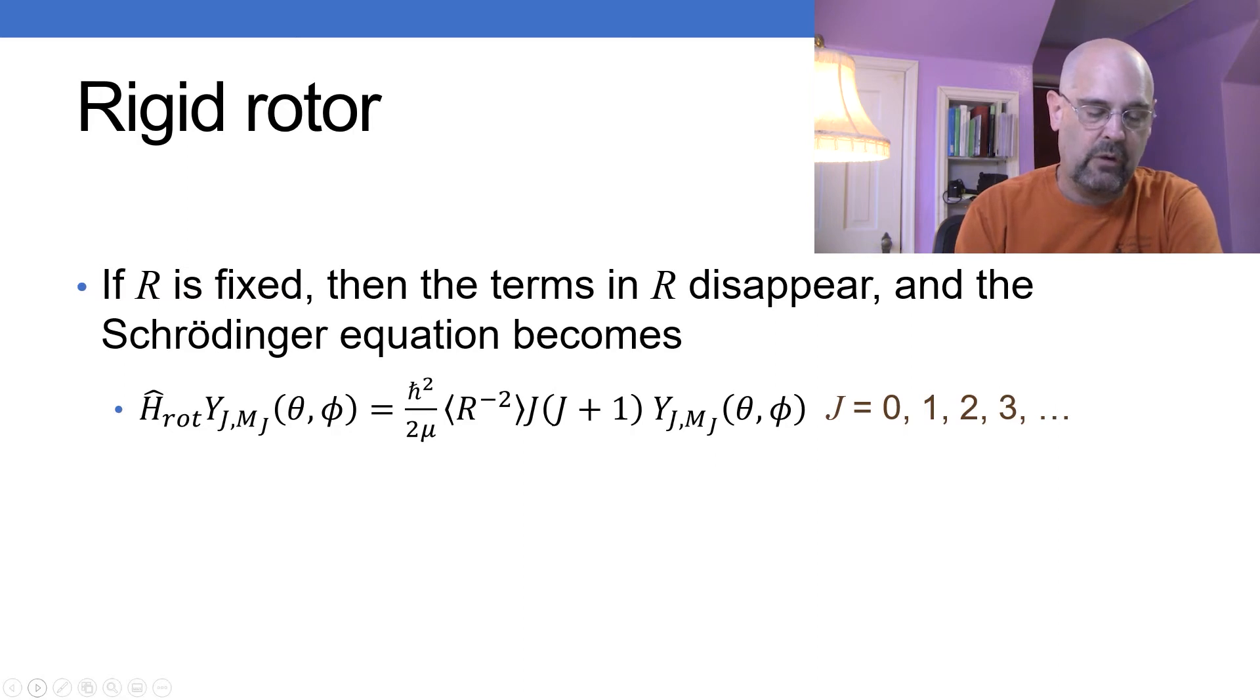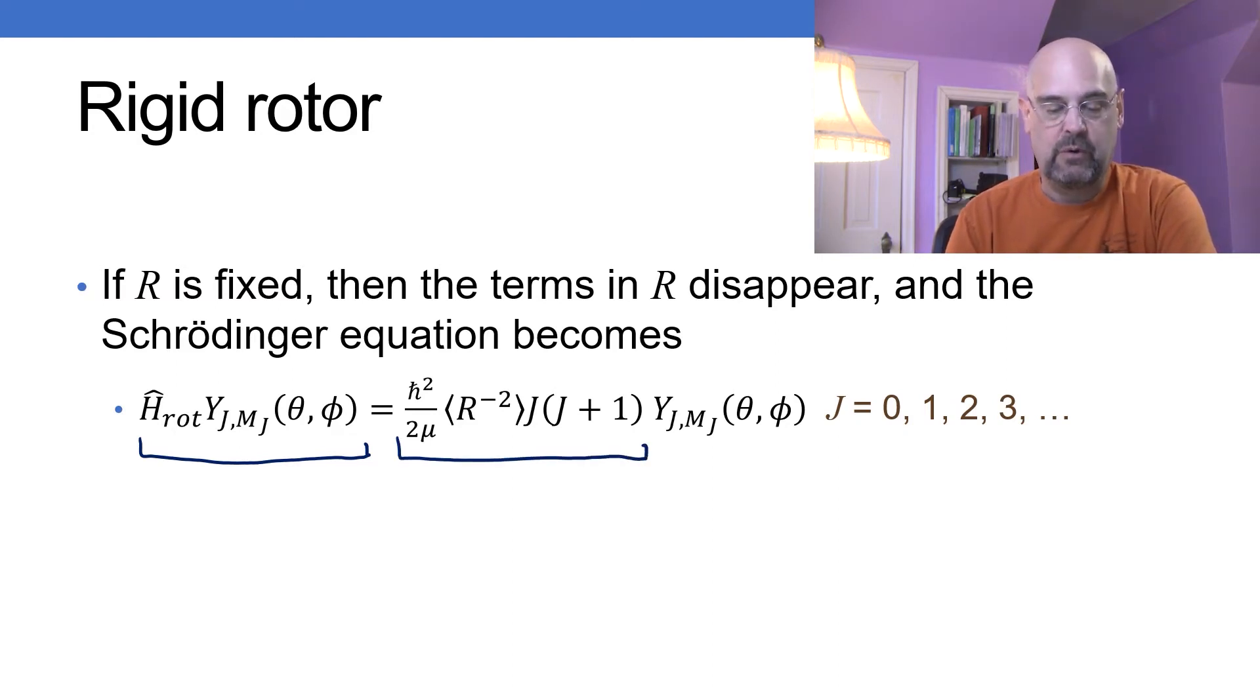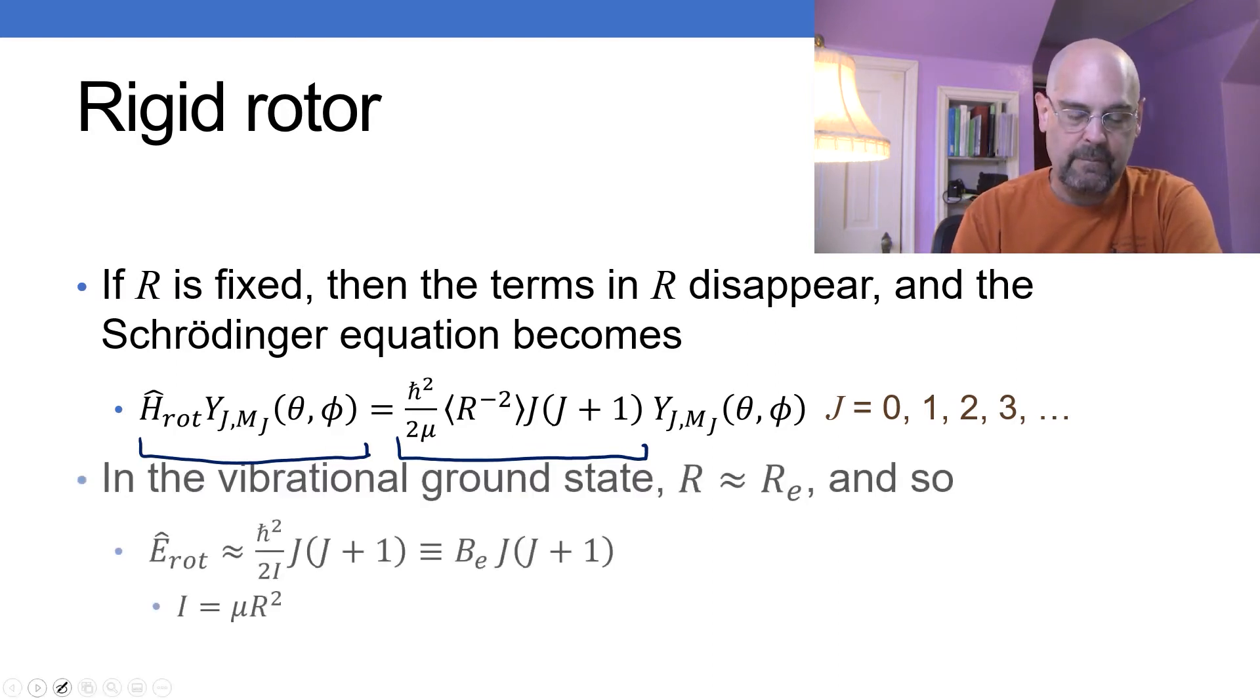The wave function are the spherical harmonics y j m sub j. I get an eigenfunction, which of course must be the energy, h bar squared over 2 mu r squared j j plus 1, and where j is equal to 0, 1, 2, 3. In the vibrational ground state it's just going to be equal to h bar squared over 2 I j j plus 1, or B_e, or B is the rotational constant j j plus 1. I is the moment of inertia, which is just the reduced mass times R squared. So this is actually fairly simple.